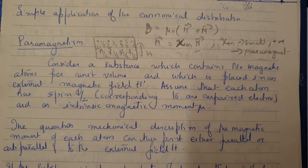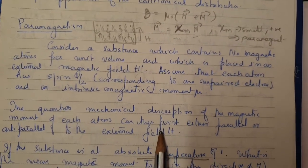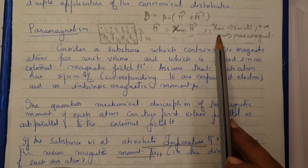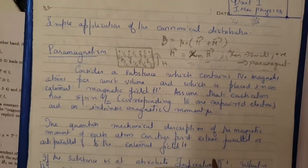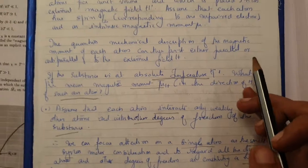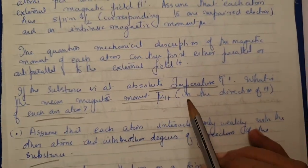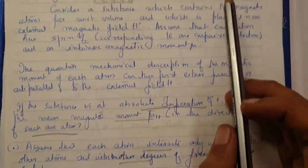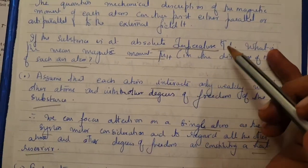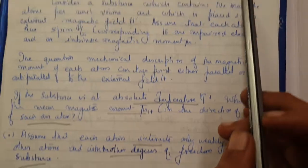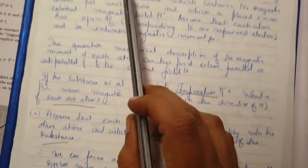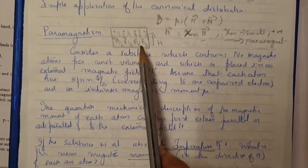χ_M is a microscopic quantity and we need quantum mechanics to describe it. But how these small microscopic quantities come together — we need to find the mean magnetic moment μ̄_H and then how it contributes to finding χ_M. That is what we are going to describe: how we can use canonical distribution to find the value of χ_M.